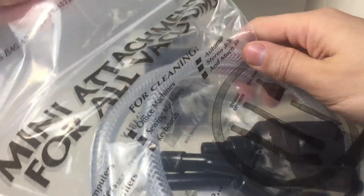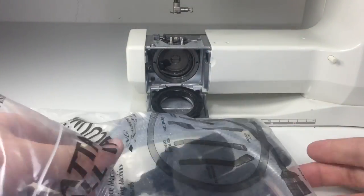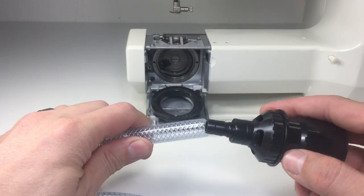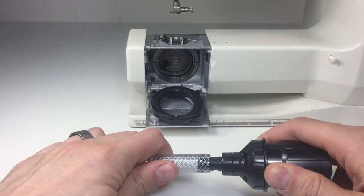For this video we're going to use a mini attachment kit to clean the machine out using a vacuum cleaner. You can find these at any sewing shops or vacuum stores, and if you can't I will leave an Amazon link below.